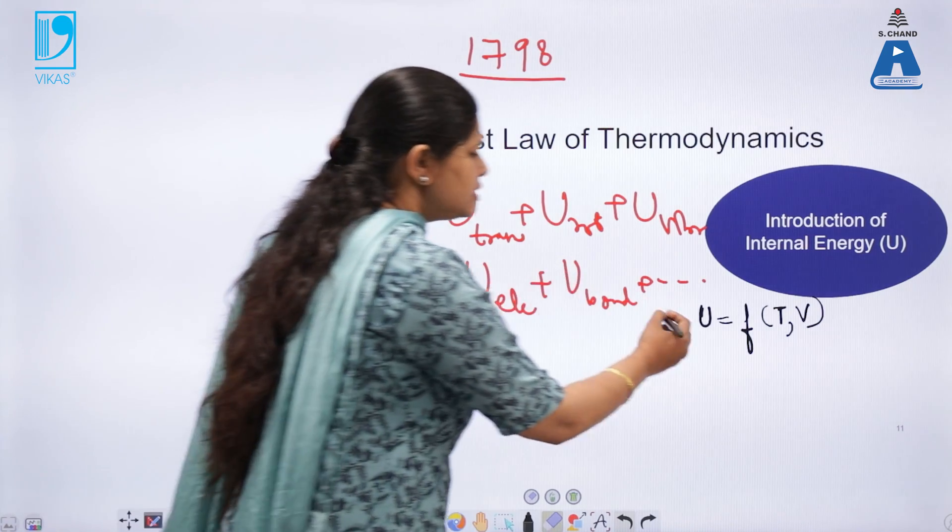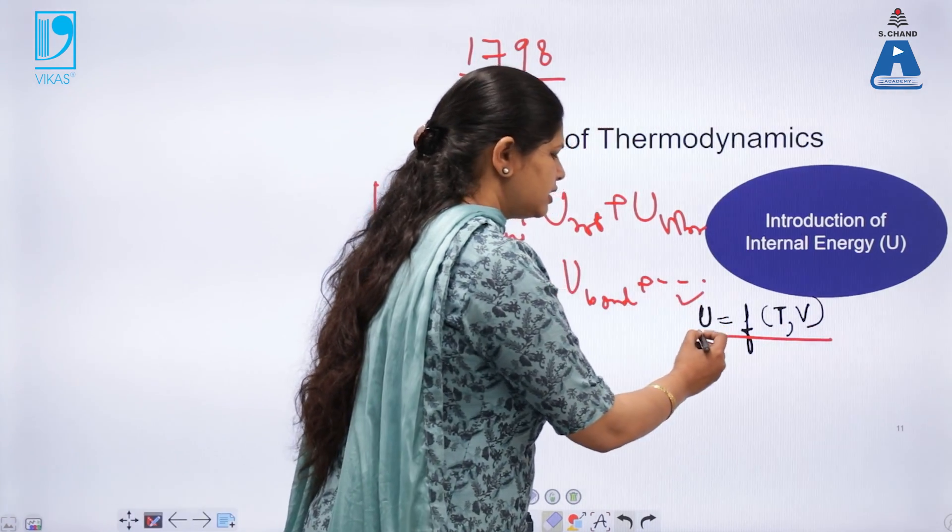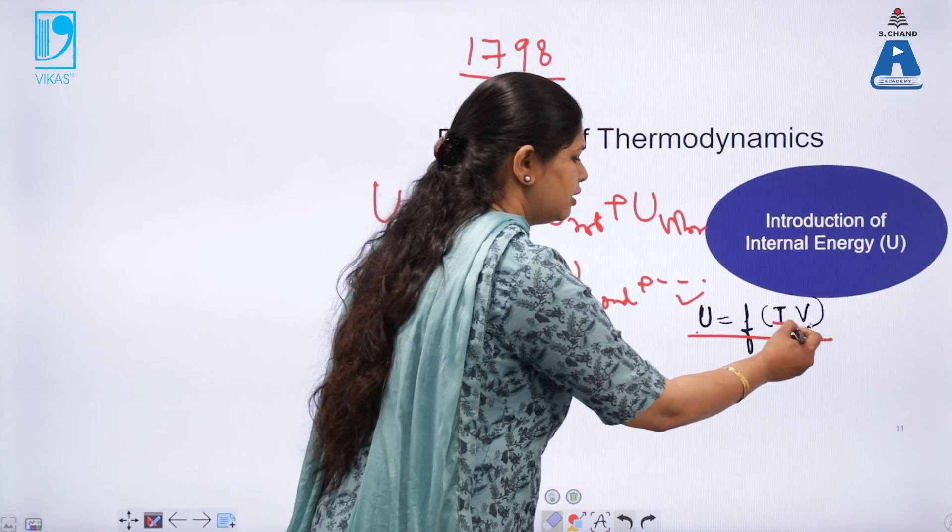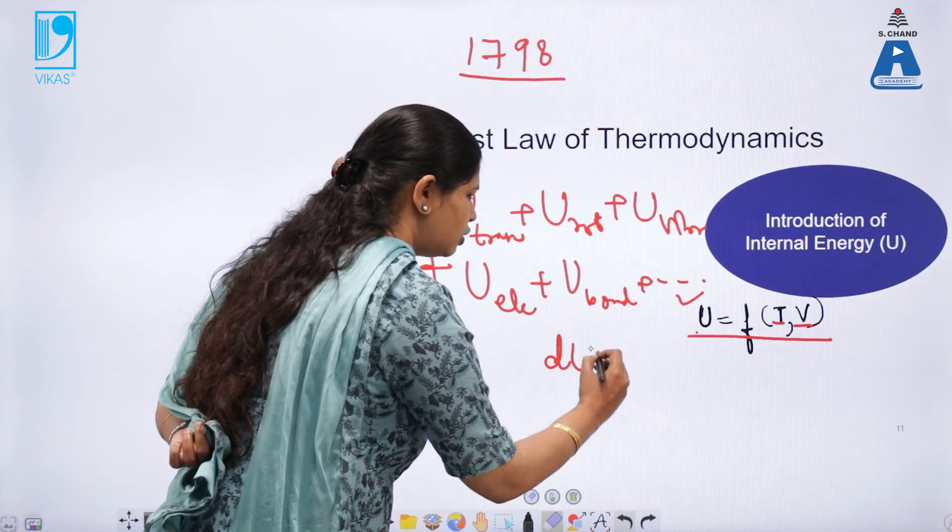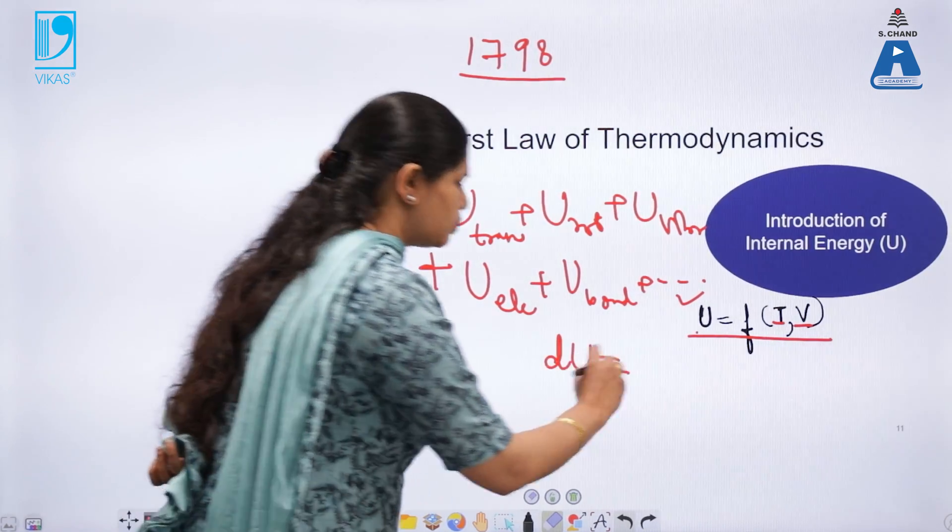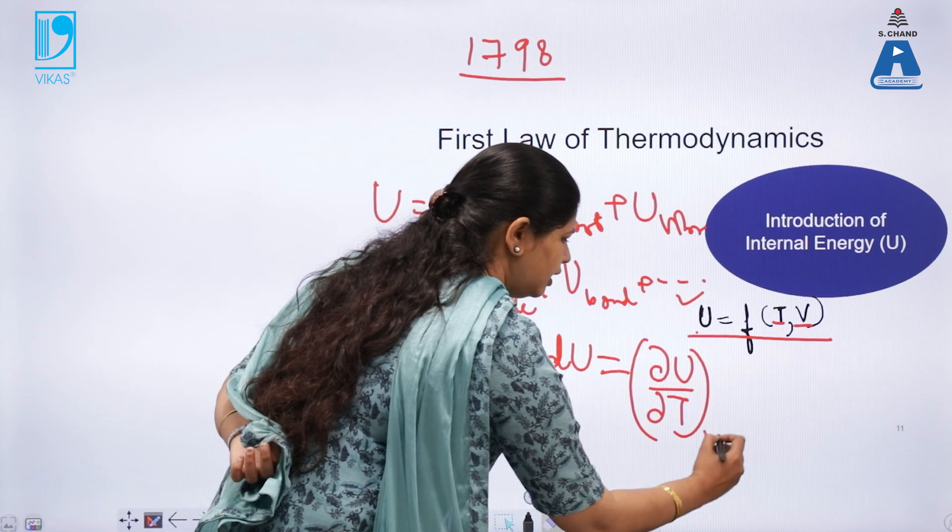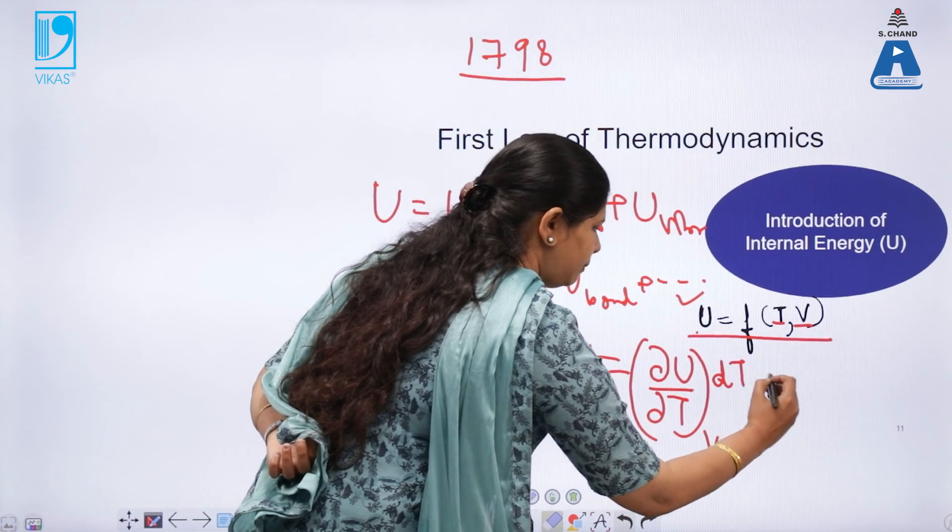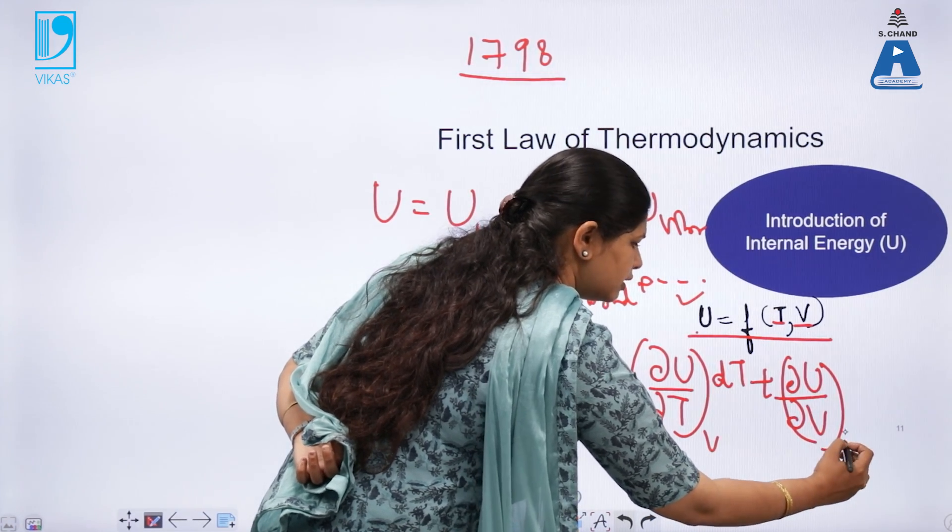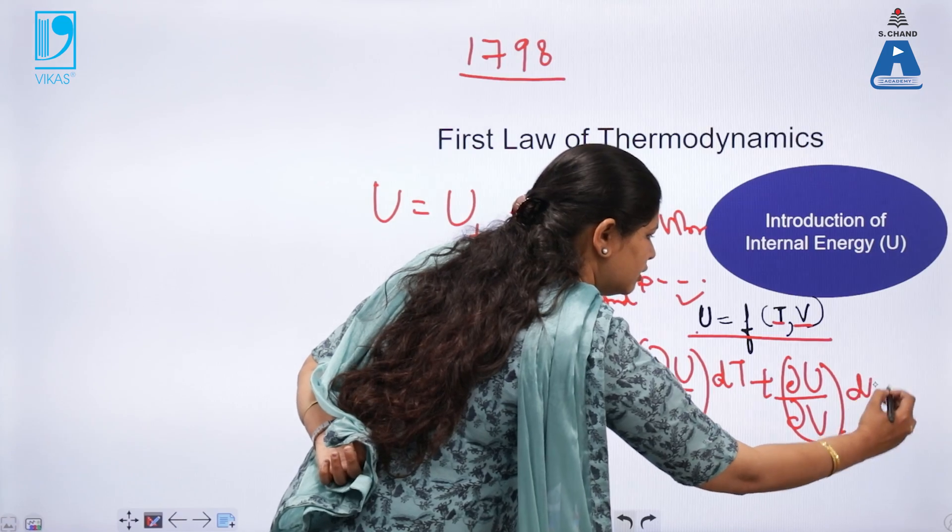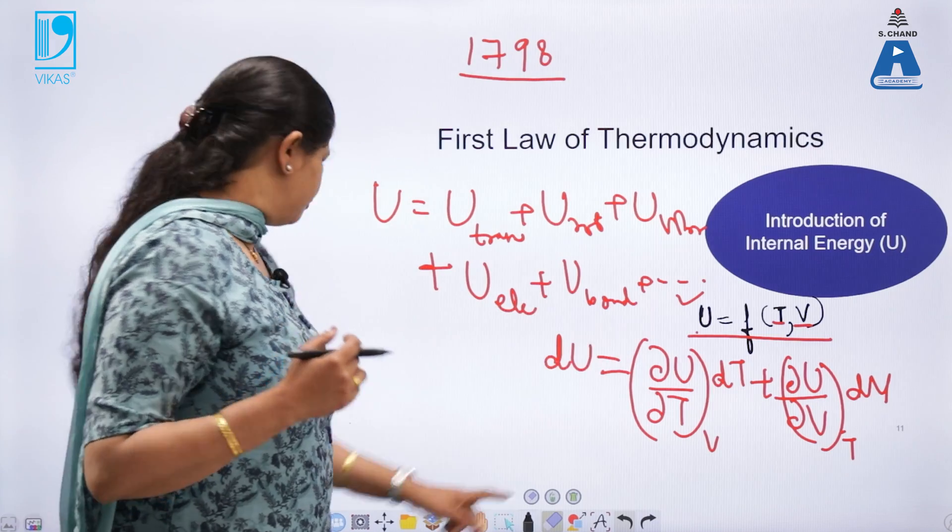This is a function of temperature and volume. So, we can say that internal energy is the dependent variable and temperature and volume are the independent variables on which it depends. And if you write the complete differential of this, it is dU is equal to partial differentiation of U with respect to T at constant V dT plus partial differential of U with respect to V at constant T dV. So, this is how you write the complete differential of a state function.